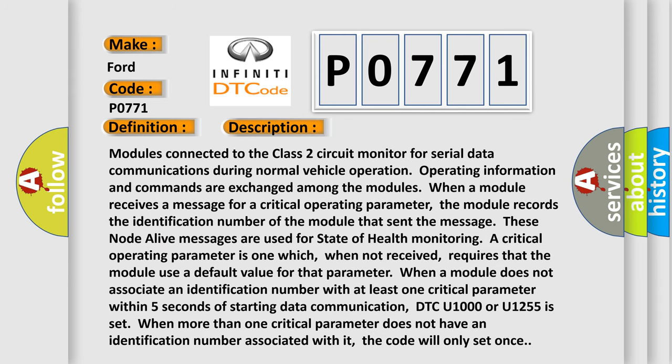Modules connected to the Class 2 circuit monitor for serial data communications during normal vehicle operation. Operating information and commands are exchanged among the modules. When a module receives a message for a critical operating parameter, the module records the identification number of the module that sent the message.